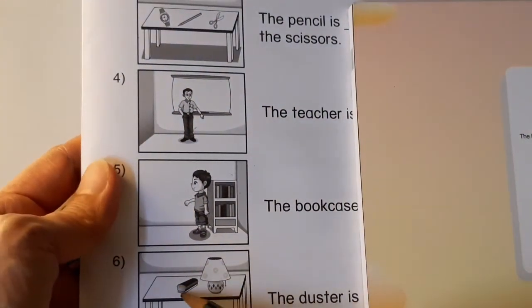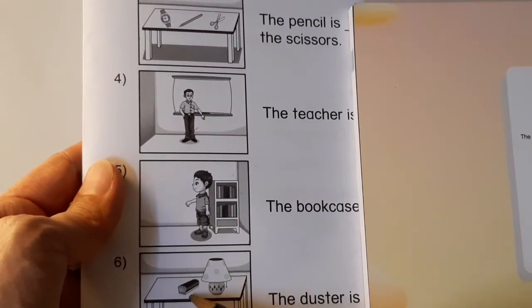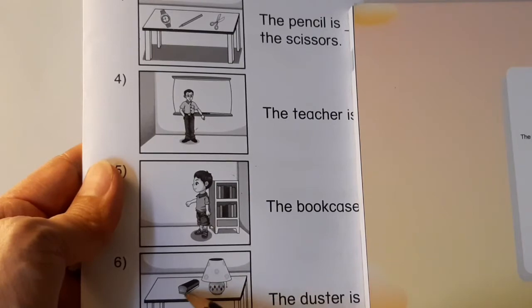What about this? The duster. Where is the duster? The duster is next to the lamp.